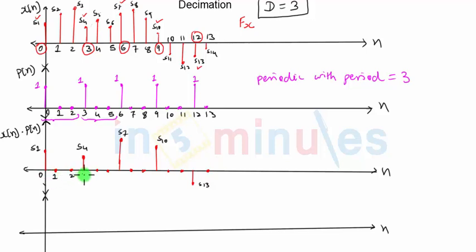We have removed all the unwanted samples. We have just kept the samples that we require in my decimated signal. So this is the multiplication of x of n and p of n. You can see we have kept the samples.